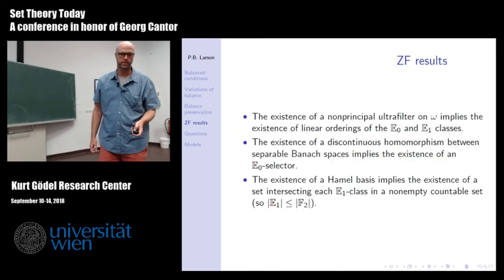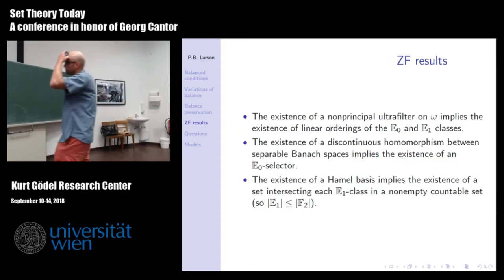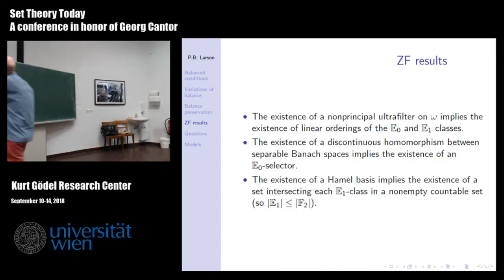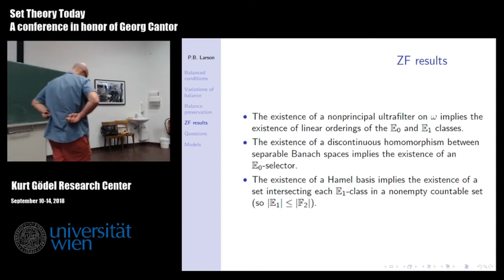Some ZF results popped out of these things. We're trying to separate forms of the axiom of choice and push various arguments. Sometimes you can't do the separation — sometimes you realize the implication actually holds. Here are some examples.